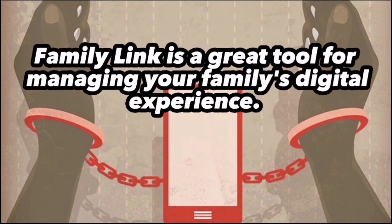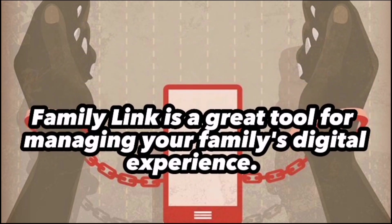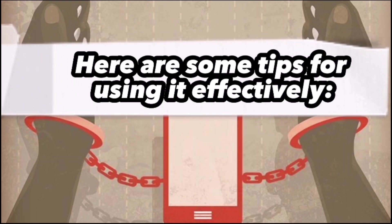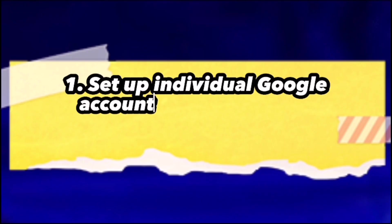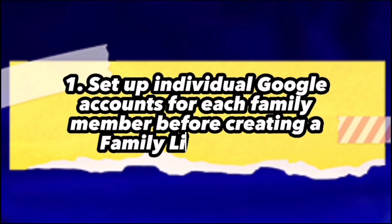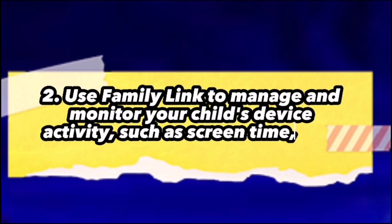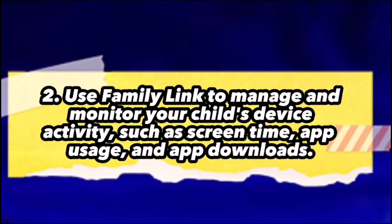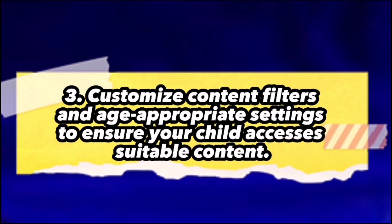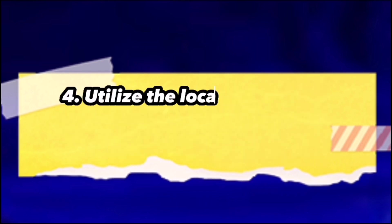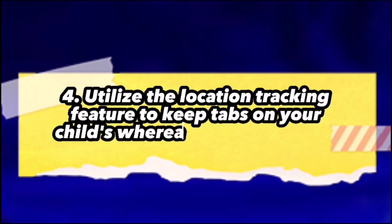Family Link is a great tool for managing your family's digital experience. Here are some tips for using it effectively. One: Set up individual Google accounts for each family member before creating a Family Link account. Two: Use Family Link to manage and monitor your child's device activity, such as screen time, app usage, and app downloads. Three: Customize content filters and age-appropriate settings to ensure your child accesses suitable content. Four: Utilize the location tracking feature to keep tabs on your child's whereabouts and ensure their safety.